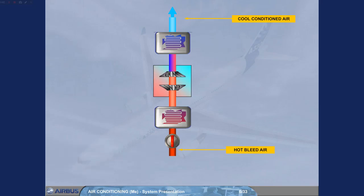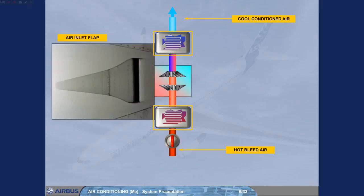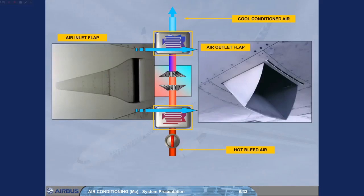Two of the stages are heat exchangers. They cool the hot bleed air using the flowing ambient air. This flow of air enters via the ram air inlet flap and exits via the ram air outlet flap.